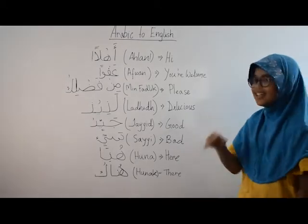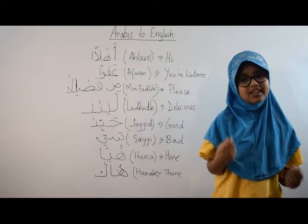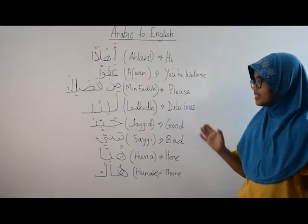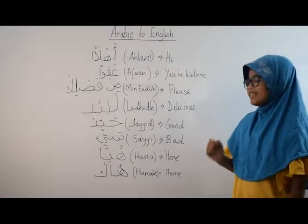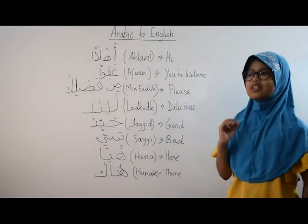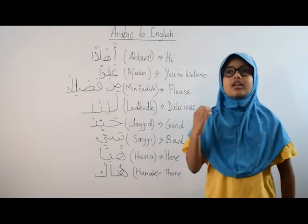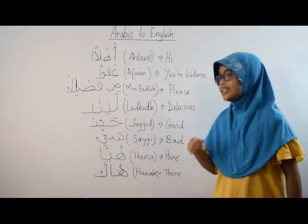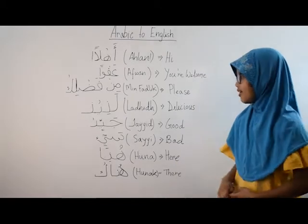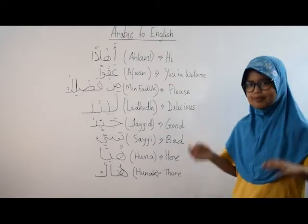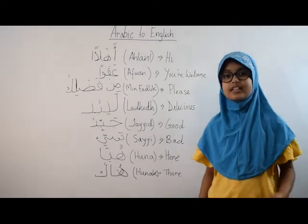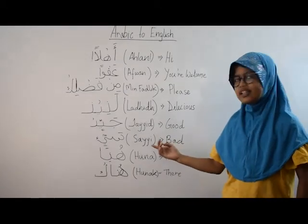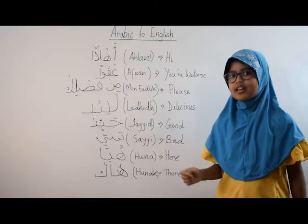The next word means 'delicious'. So if you were at a party and eating some nice food, you would say delicious. The next word is 'jayeed', and it means 'good'. For example, if the weather was nice, you would say the weather is jayeed today. The opposite of jayeed is 'sayyee', which means 'bad'.